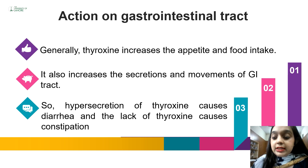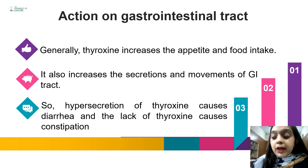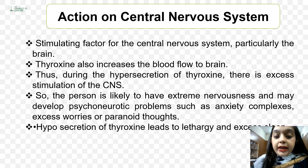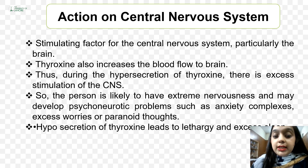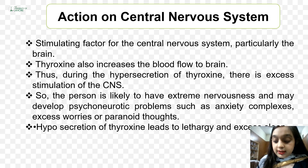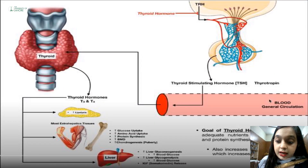Thyroid hormone generally increases appetite and food intake, and also increases secretion and movement of the GI tract. Therefore, hypersecretion of thyroxine causes diarrhea, while lack of thyroid hormone causes constipation. Thyroid hormone is also a stimulating factor for the central nervous system, particularly the brain, increasing blood flow to the brain. Hypersecretion of thyroxine causes excess stimulation, leading to extreme nervousness, psychoneurotic problems such as anxiety, excess worry, and paranoid thoughts, while hyposecretion leads to lethargy and excessive sleep.